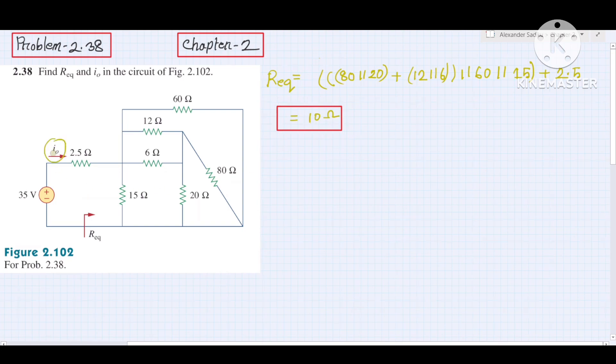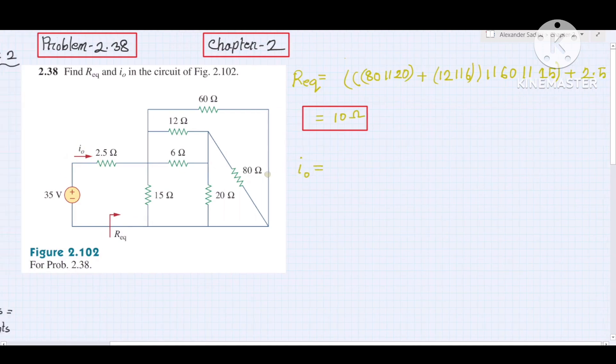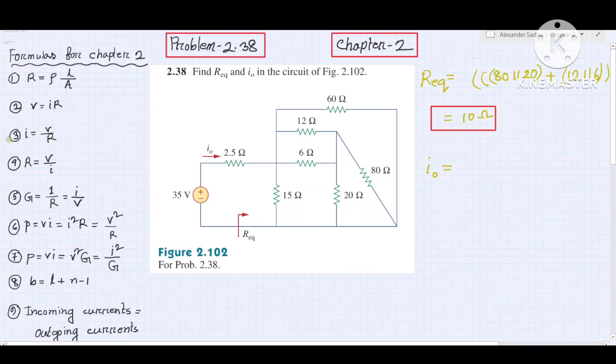Now we find i naught. i naught is actually the current from 35 volt source. The current from 35 volt is the total current. To find i naught, we use the formula i equals V by R.